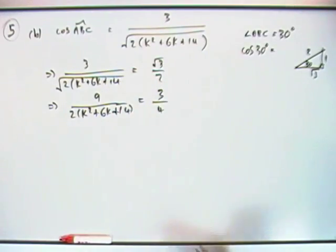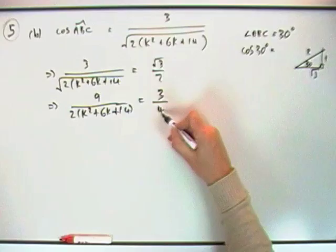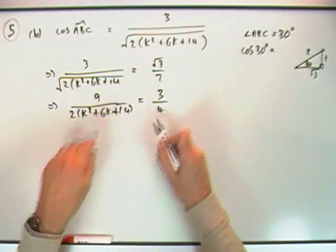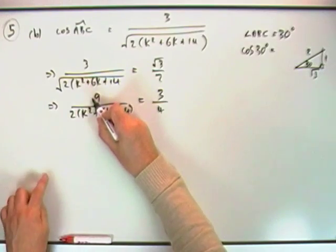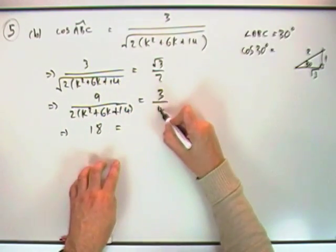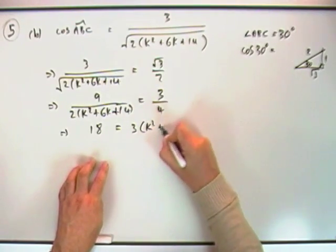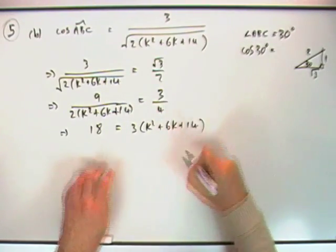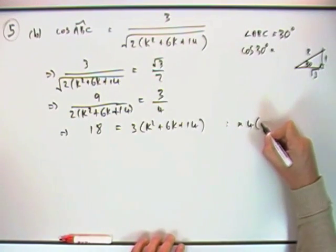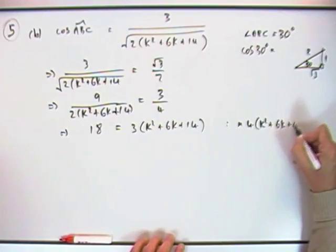Now get rid of the fractions, so multiply both sides—you could just think cross multiply. Four times the bracket will go, that will leave you 18, equals 3 times (k²+6k+14). What I did there was I multiplied by 4 times the bracket (k²+6k+14).